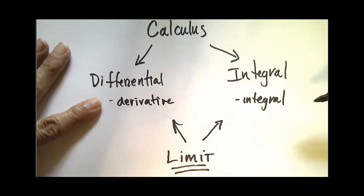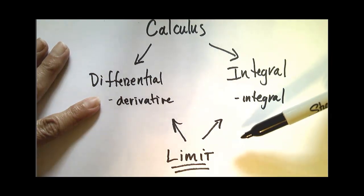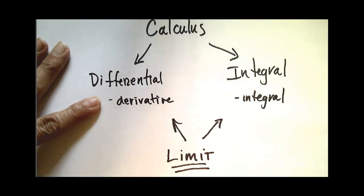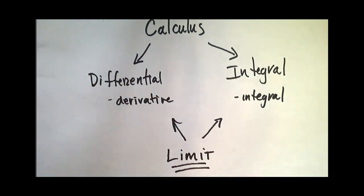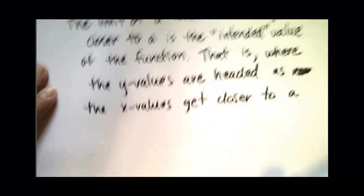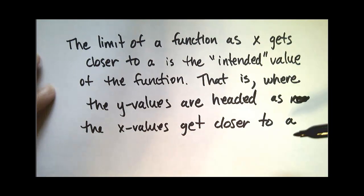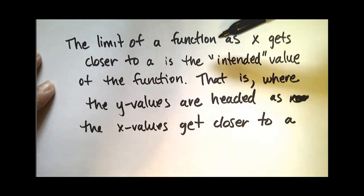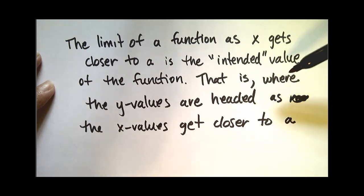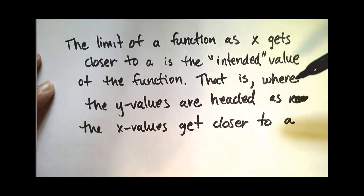Both of these big ideas are centered around the idea of the limit. It is very important that, before we begin, you understand what it means for a function to have a limit at a particular value. Intuitively, the limit of a function as x gets closer to a is the intended value of the function — that is, where the y values are headed as the x values get closer to a.